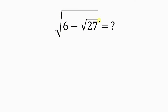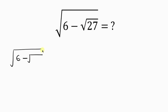Our first step will be for us to simplify the square roots inside. So we have the square root of 6 minus the square root of 27, which is the same as 9 times 3.